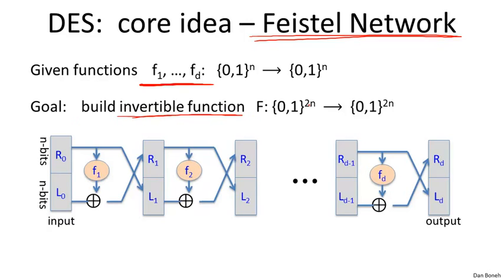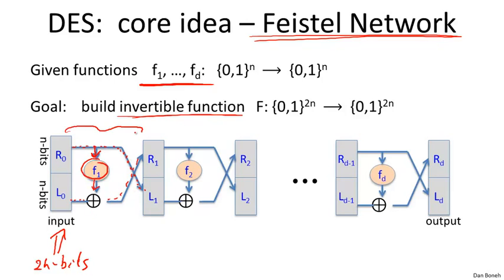The construction works as follows. The input is two blocks of n bits — R and L for right and left. Following the R input, it gets copied into the L output without any change. The L input is changed: the R input is fed into function f1, and the result is XORed with L0 to become the new R1. This is one round of a Feistel network using function f1. We then do this again with f2, and again and again through fd rounds.